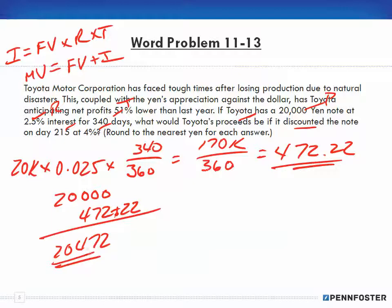Now we need to figure out what the discount period is. If we had 340 days and it's discounted on day 215, that means the discount period was 125 days.